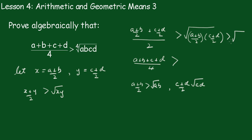This would be √(ab) × √(cd). So this has to be greater than √(ab) × √(cd), and therefore (a+b+c+d)/4 has got to be greater than the fourth root of abcd.